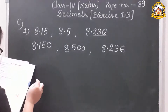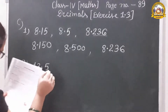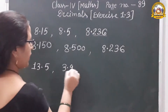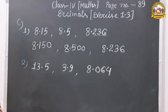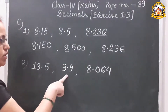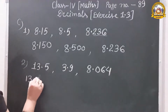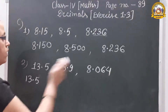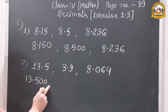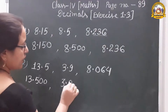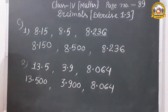Second: 13.5, 3.9, and 8.064. The first two numbers have one decimal place and the last has three decimal places. The highest is three, so we add two zeros to 13.5 and 3.9: 13.500, 3.900, and 8.064. Now all three are like decimals with three decimal places each.